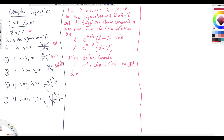If one eigenvalue is zero and the other is negative, there will not be a single equilibrium point — there will be a line of critical (equilibrium) points. The direction field points towards that line. If one is zero and the other is positive, the direction field points away from that line of critical points.